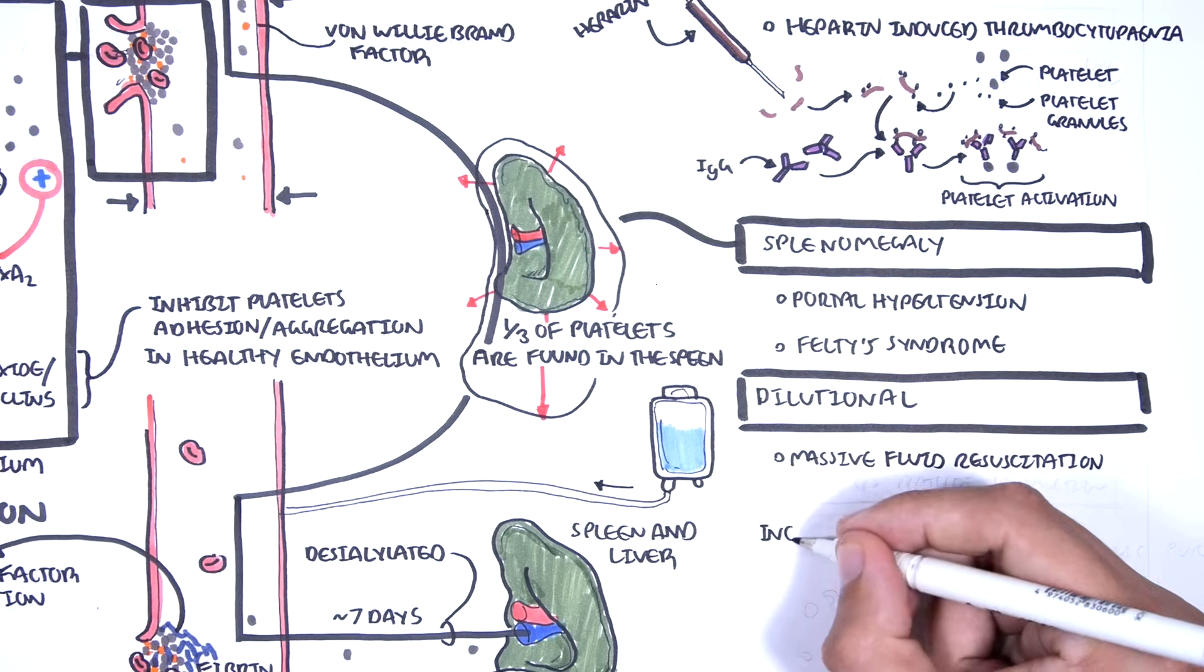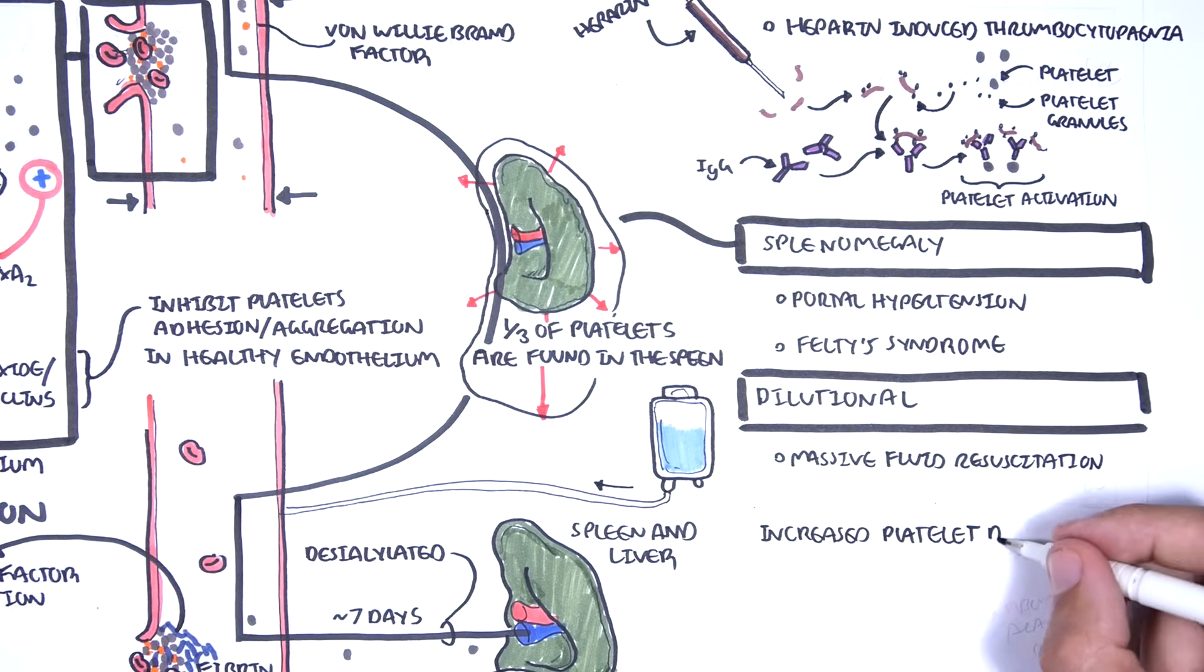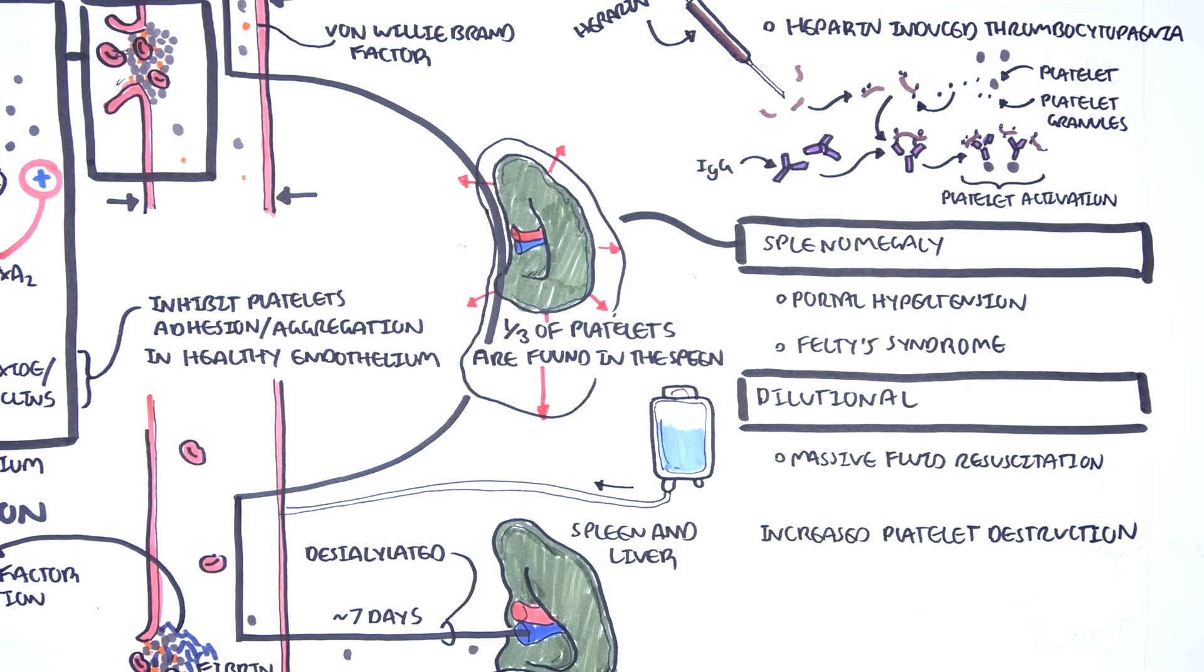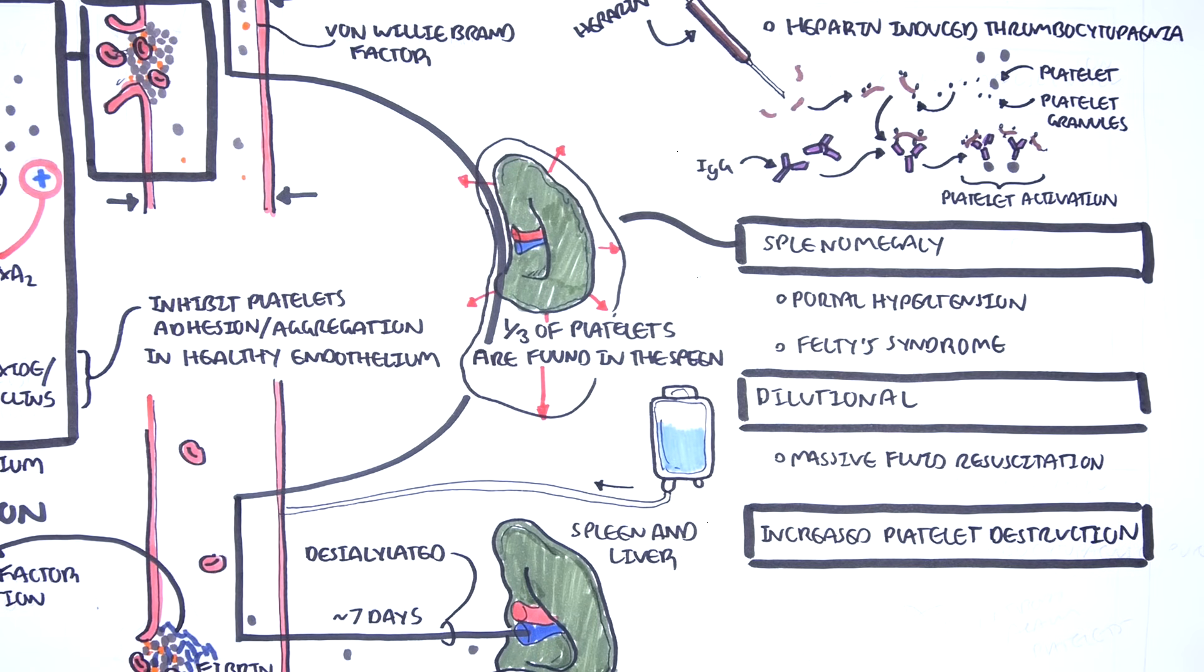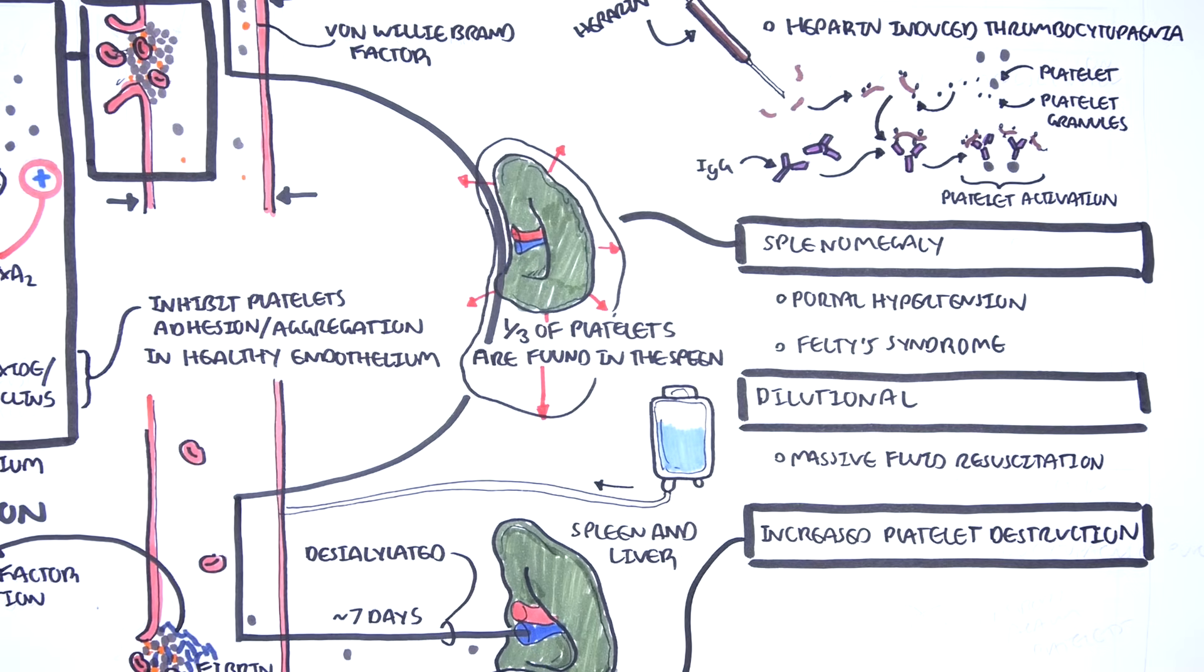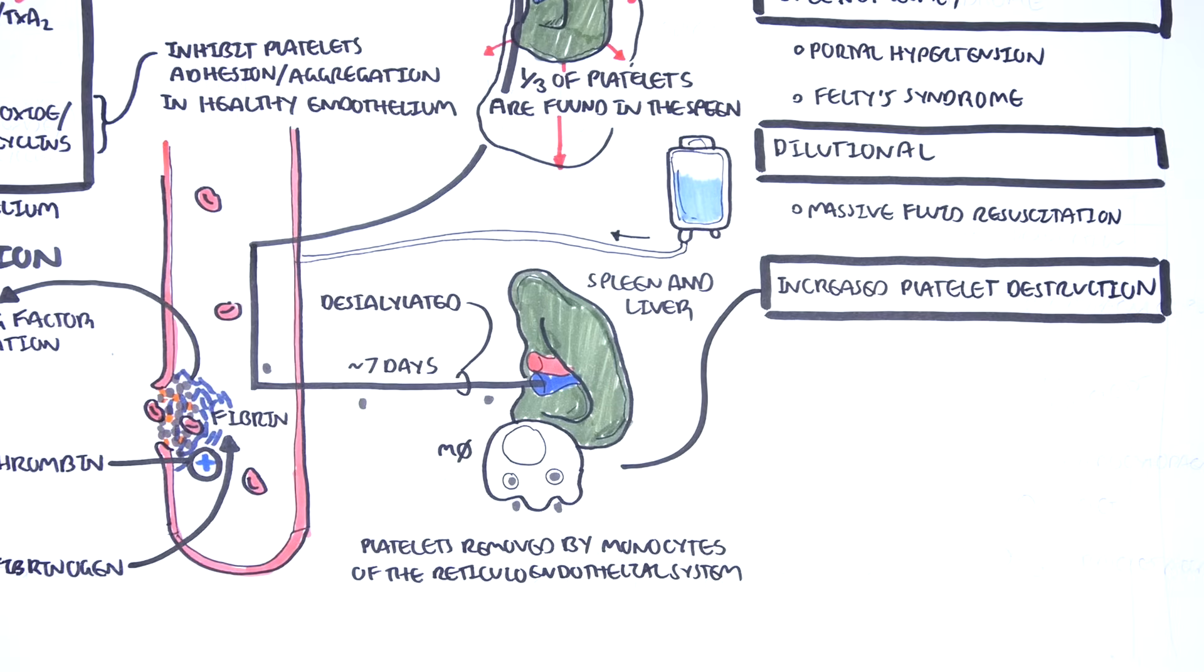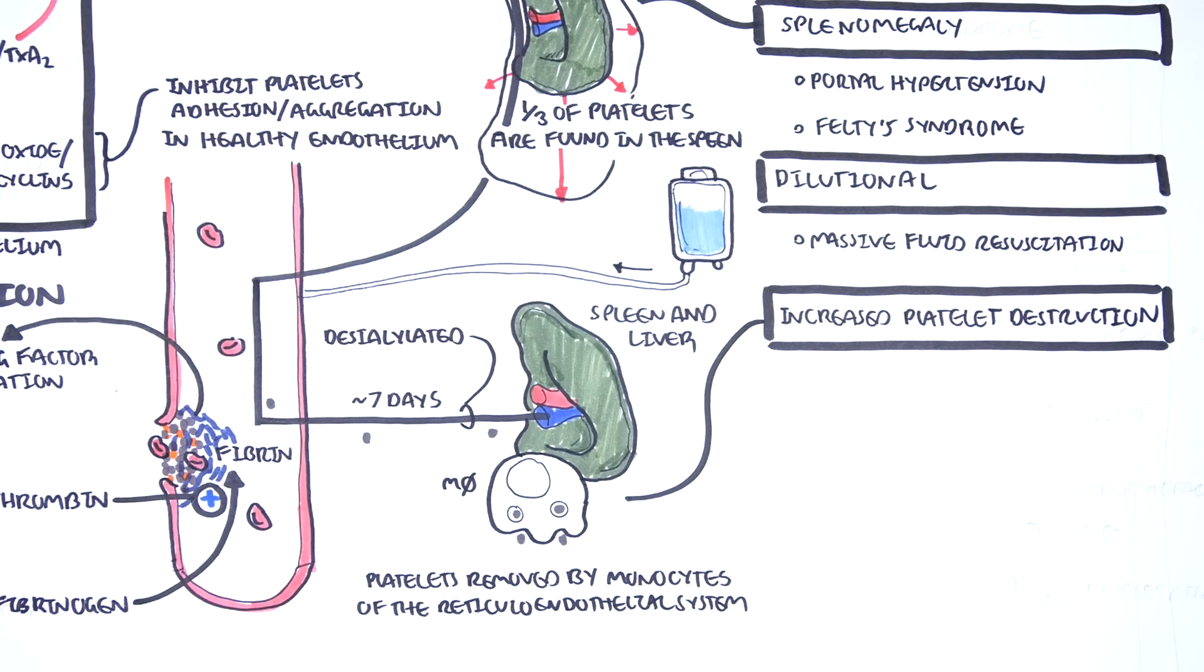Another category of thrombocytopenia can be due to increased platelet destruction. Platelets survive in circulation for about 7 days, after which they are removed by monocytes and macrophages of the reticuloendothelial system, such as the liver and the spleen. Some conditions accelerate platelet destruction,